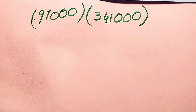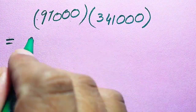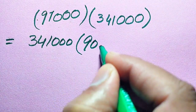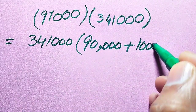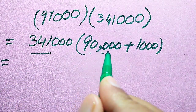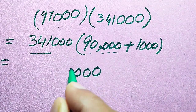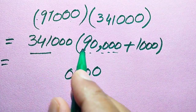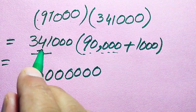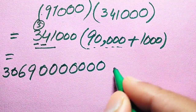Our next target is to multiply these two larger values, 91,000 × 341,000, without a calculator. We break 91,000 as 90,000 plus 1,000. Multiplying 341,000 by 90,000: write four zeros, then multiply by 9 — 9×0=0, 9×0=0, 9×0=0, 9×1=9, 9×4=36 write 6 carry 3, 9×3=27 plus 3 is 30. This gives 30,690,000,000.